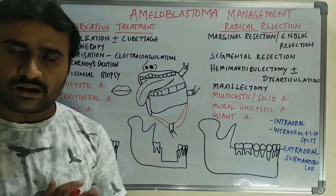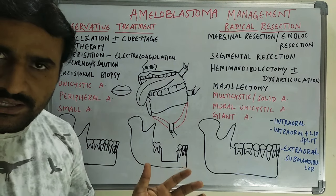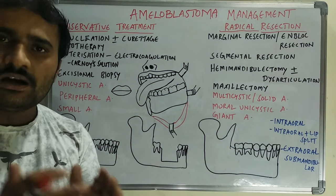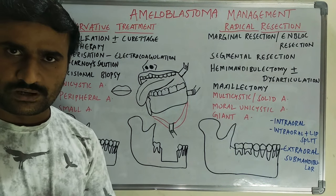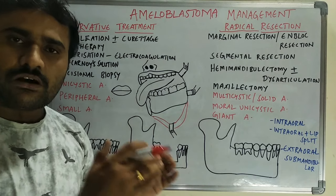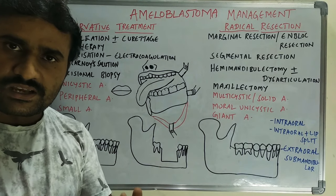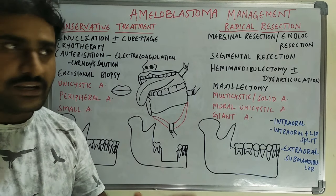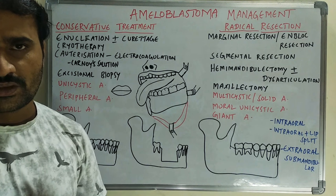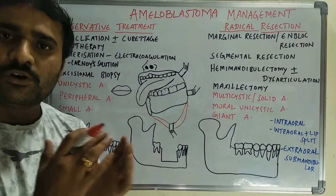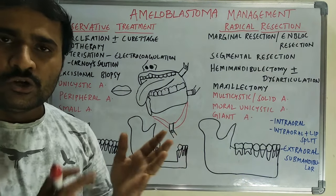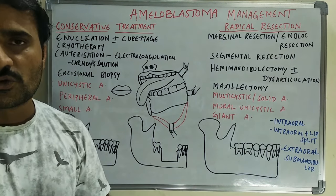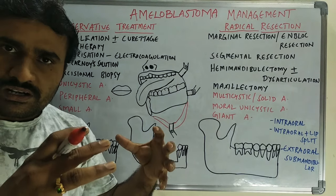If you see the ameloblastoma, it could be broadly multicystic ameloblastoma, unicystic ameloblastoma, or peripheral ameloblastoma. Multicystic or solid ameloblastomas are aggressive and should generally be treated by radical resection. For unicystic ameloblastomas, there are three types — luminal and intraluminal ameloblastomas are somewhat less aggressive.